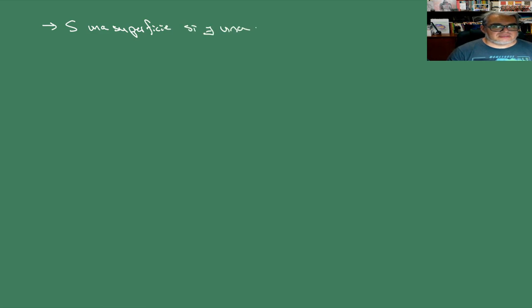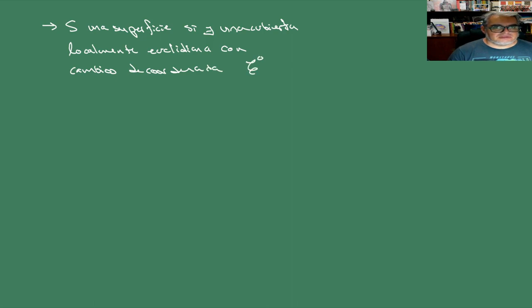Podemos refrasear nuestra condición, y es importante esta parte, porque cuando probemos que algo es una superficie no vamos a probar paso a paso. Lo que vamos a probar es que S es una superficie diferenciable si existe una cubierta localmente euclidiana con cambios de coordenada C∞ compatibles.